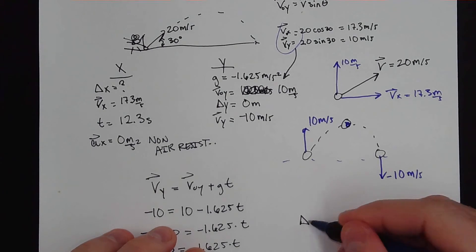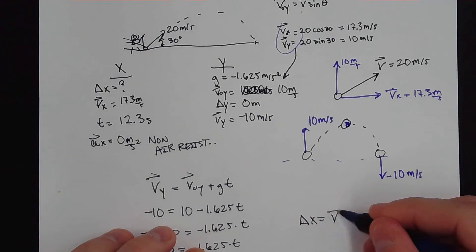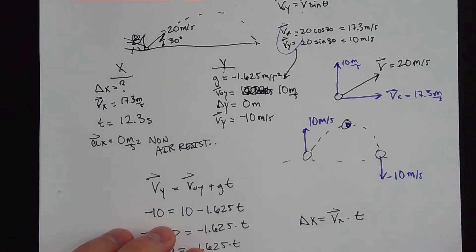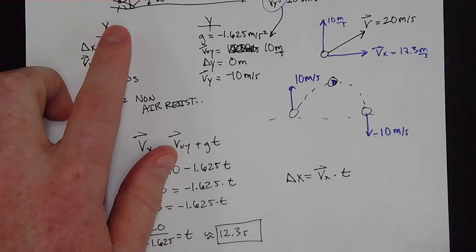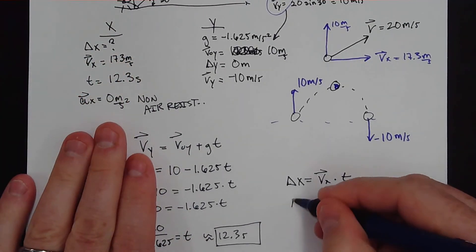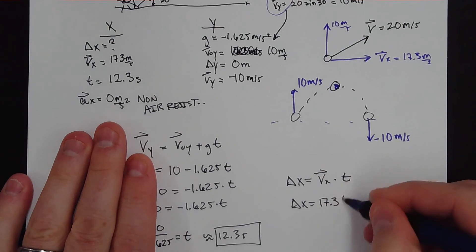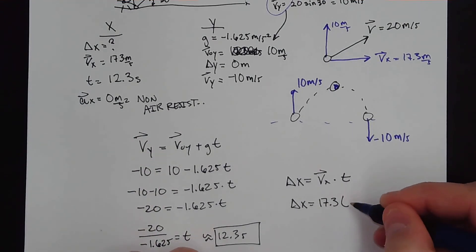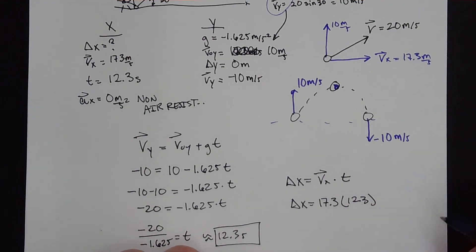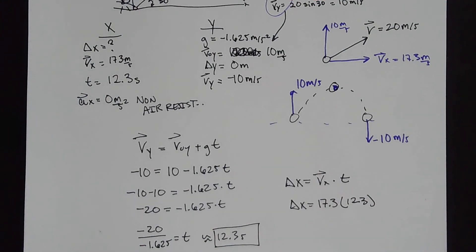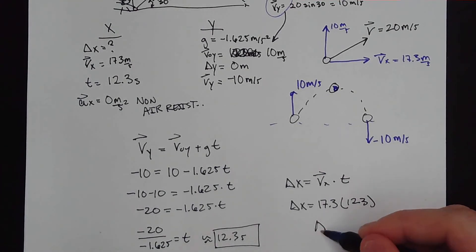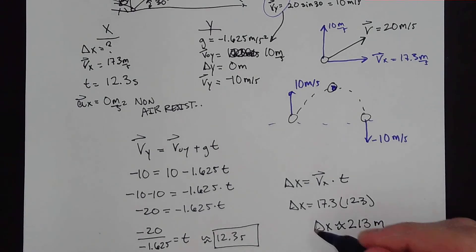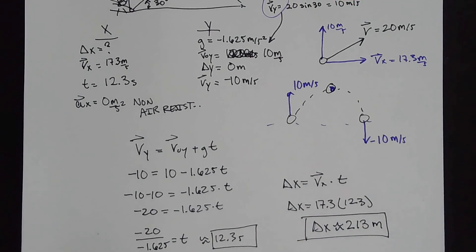All right, so now we're looking for the displacement. Well, displacement is just the velocity in the x direction times the time. And we know our velocity in the x direction is 17.3. And our time is just 12.3 seconds. So we're just going to do 17.3 times 12.3. And that will actually give me a displacement of approximately 213 meters. That's a pretty good golf shot right there.